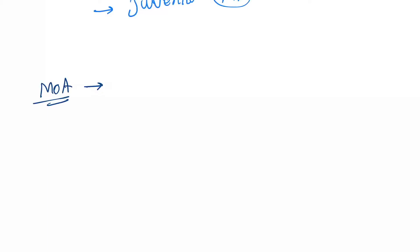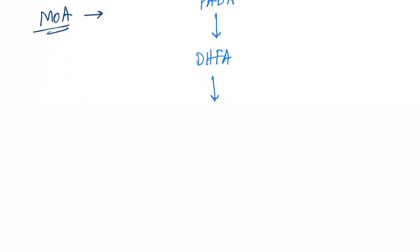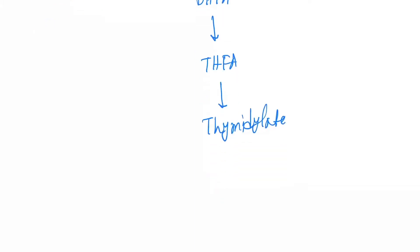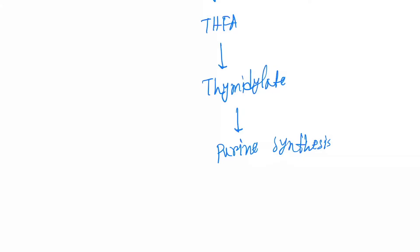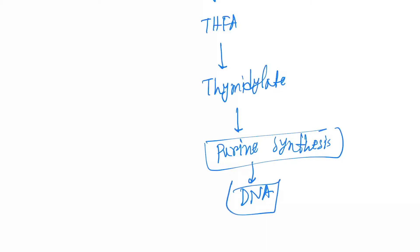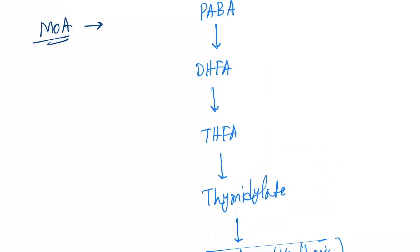Now let's discuss the mechanism of action. First, let's look at the folic acid synthesis pathway: PABA forms DHFA, then THFA, then thymidylate, then purine synthesis, and then it forms DNA. The enzyme from DHFA to THFA is DHFR (dihydrofolate reductase).